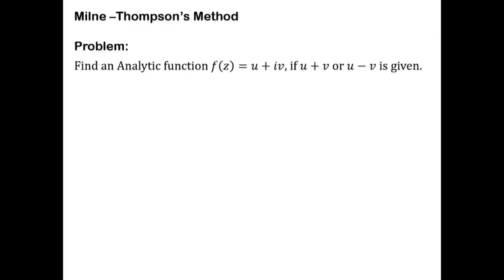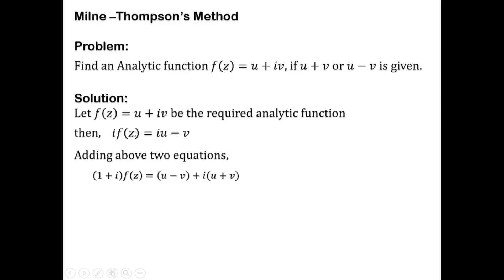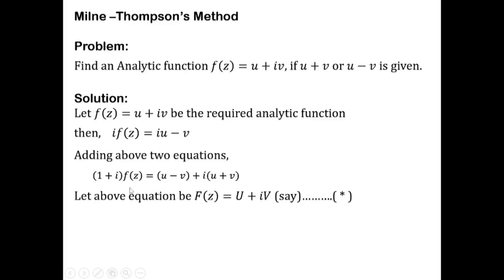Let us discuss the approach to find the solution. Let f(z) = u + iv be the required analytic function. We multiply throughout by i to get i·f(z) = iu + i²v, that is iu minus v. Adding both functions we get (1 + i)·f(z) = (u - v) + i(u + v).